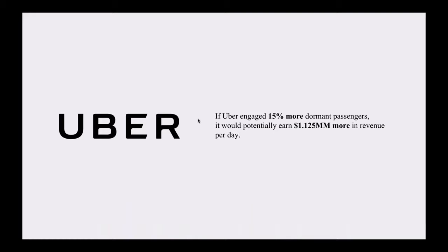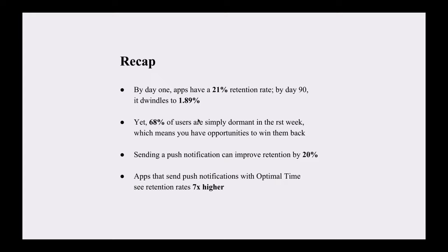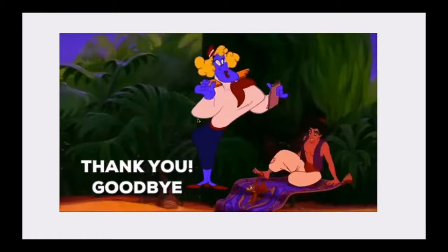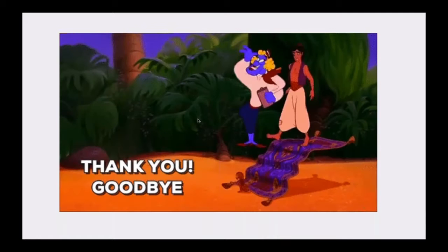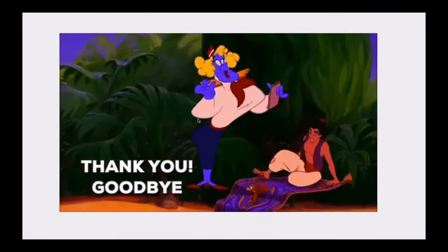To wrap up, let's look at a use case with Uber. According to one source, Uber has around 8 million users and 1 million trips per day. If the average ride is around $5, and Uber engages an additional 15% of dormant users, that would result in 1.1 million more in revenue per day. To recap: by day one, apps have a 21% retention rate; by day 90 it dwindles to 1.89%. Yet 68% of users are simply dormant, which means you have opportunities to win them back. Sending a push notification can improve retention by 20%, and apps that send with optimal time see retention rates seven times higher.